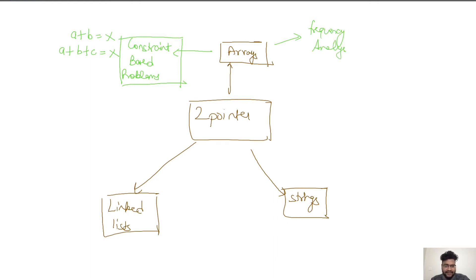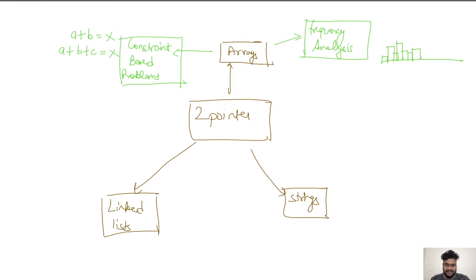The other kind of pattern we see in arrays is around frequency analysis. For example, if the frequencies of multiple values are given, we need to do some analysis on top of it. A simple question could be: if these are buckets of water and each frequency represents a bucket, how much water can we store at maximum? This kind of problem falls under frequency analysis. The third kind of problem in arrays is the application of sorted or sequence arrays.